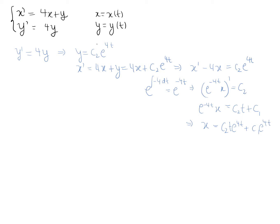We have now proved that if x and y satisfy the given system of equations, then x must take the form c1 e to the 4t plus c2 t e to the 4t, and y equals c2 e to the 4t.